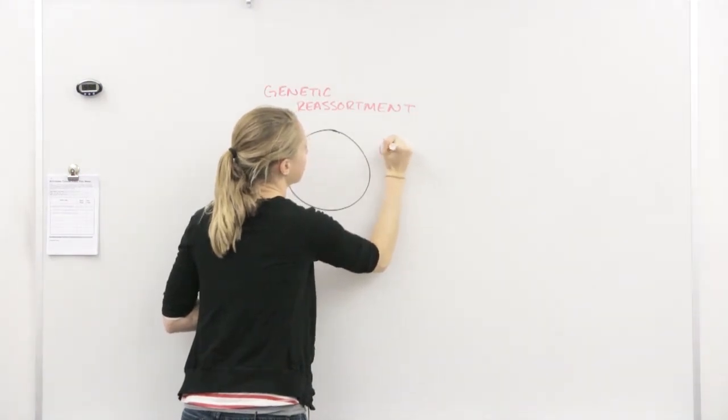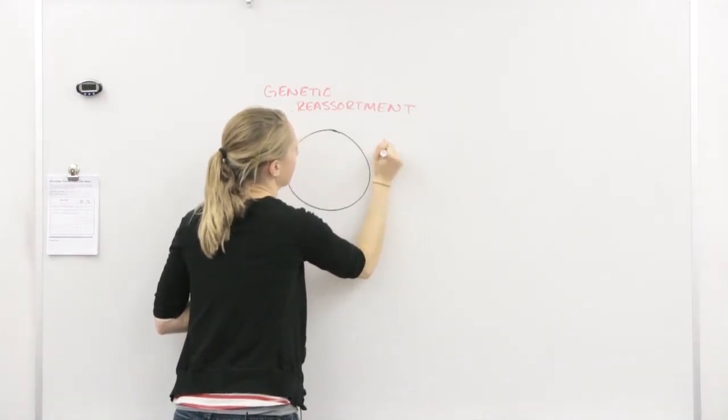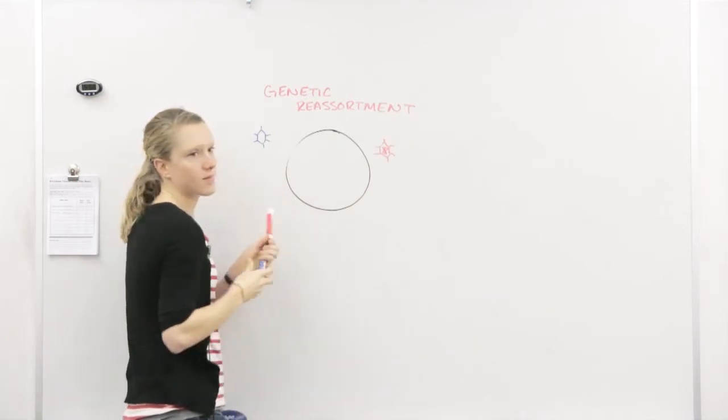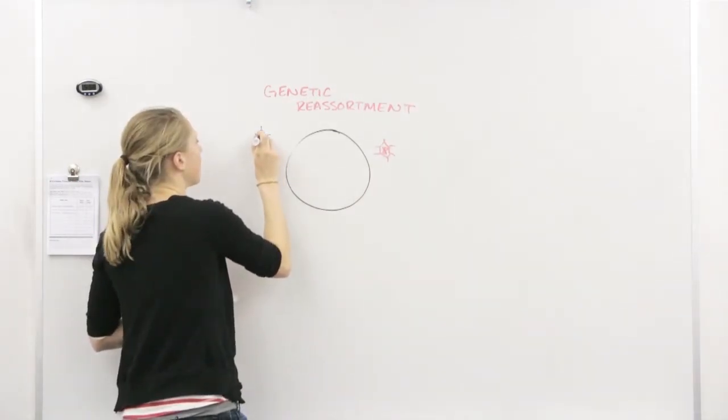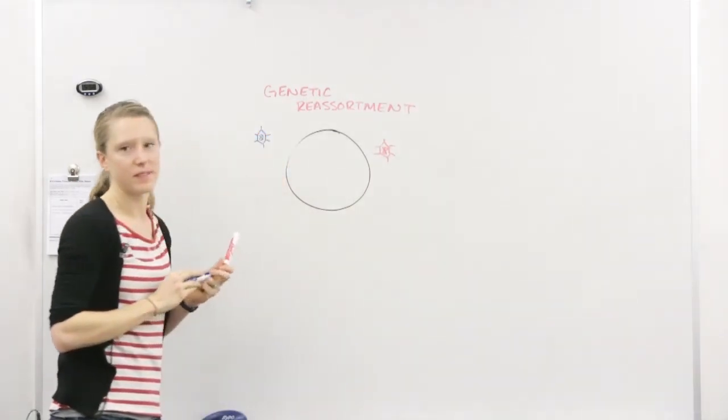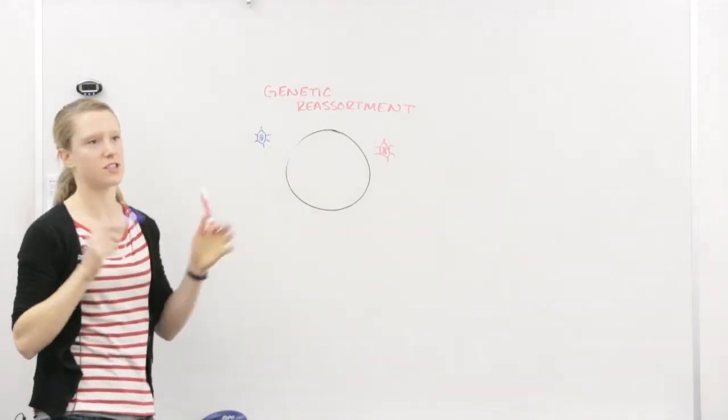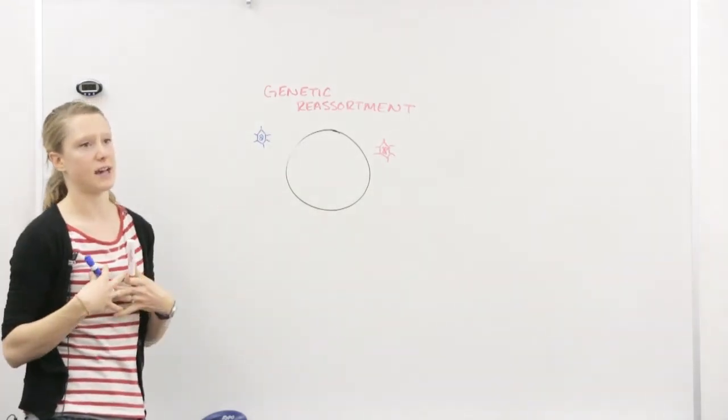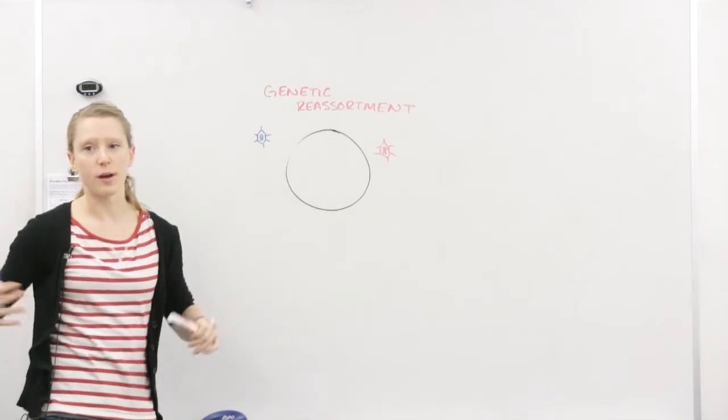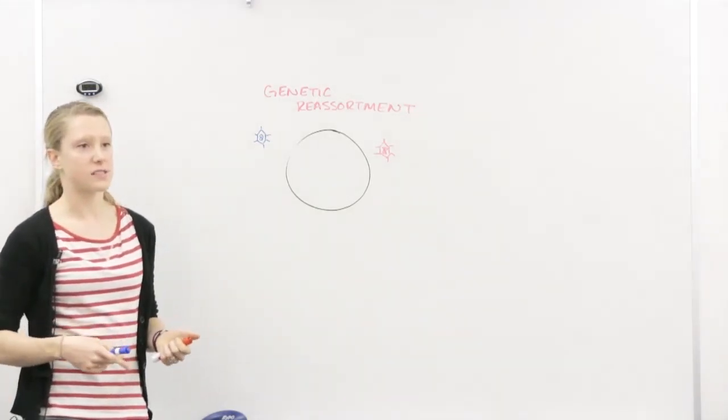So let's say that I have two strains of the flu. I have the red strain and the blue strain. Okay? And lucky you, you're infected with both of them at the same time. Okay, so you have two strains in your body at the same time. What do they both need to do to replicate? Go to a host cell.